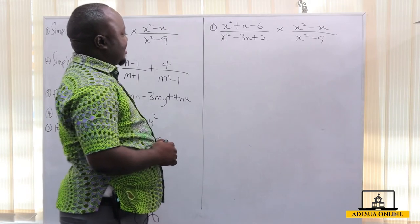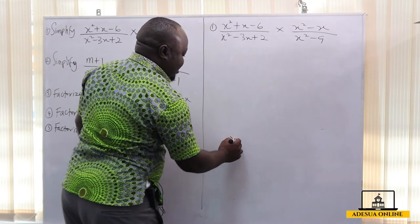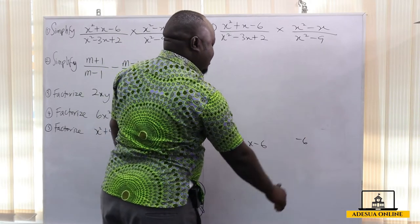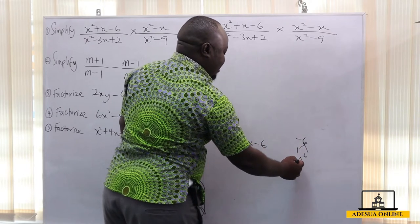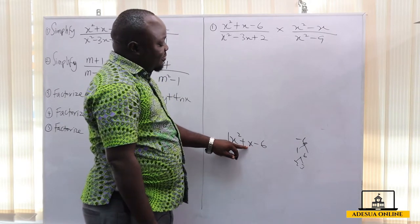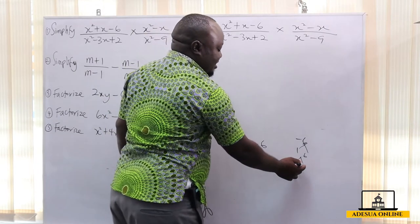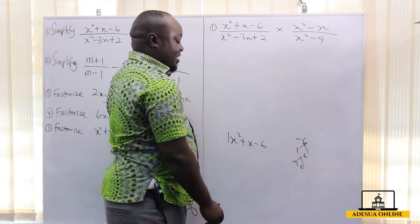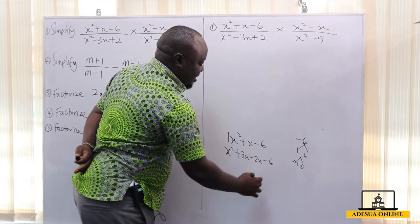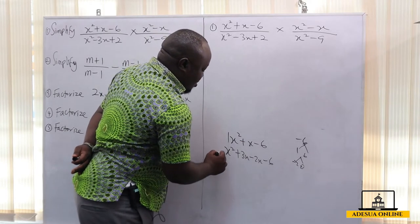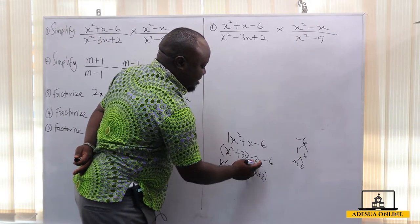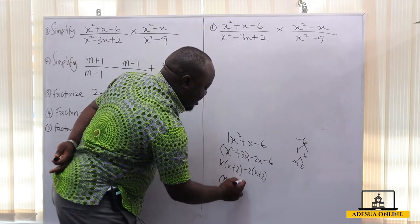If I have x² + x - 6, I need to factorize this. The coefficient of x² is 1, so 1 times negative 6 is negative 6. Give me the factors of negative 6: 1 and 6, 2 and 3. I want factors that when I multiply I get negative 6, but when I add I get positive 1. So 3 should be positive and 2 must be negative, so that 3 minus 2 gives me 1. This is the same as x² + 3x - 2x - 6.